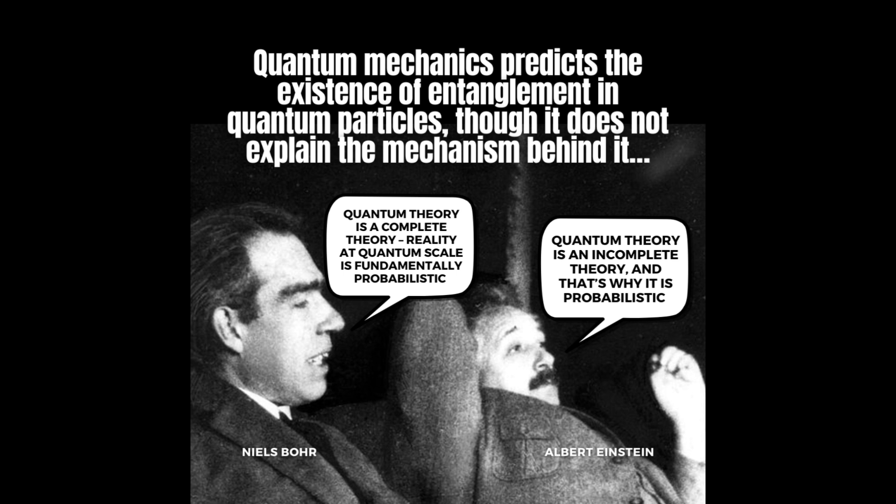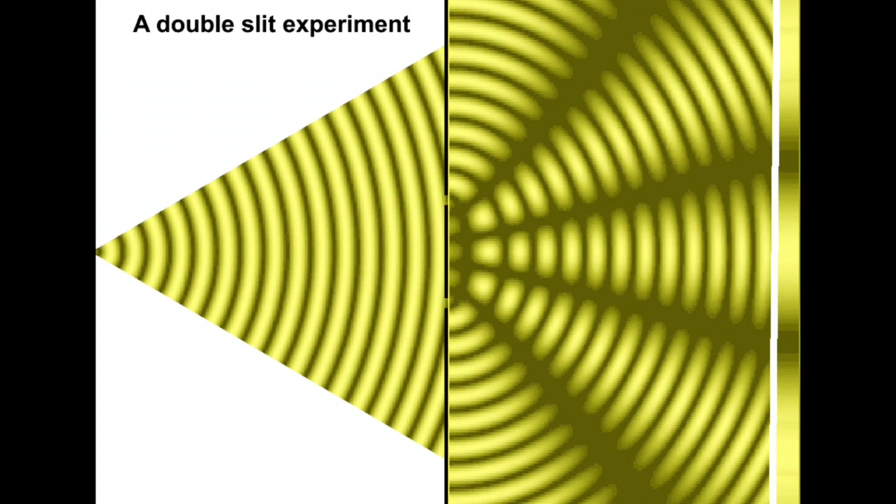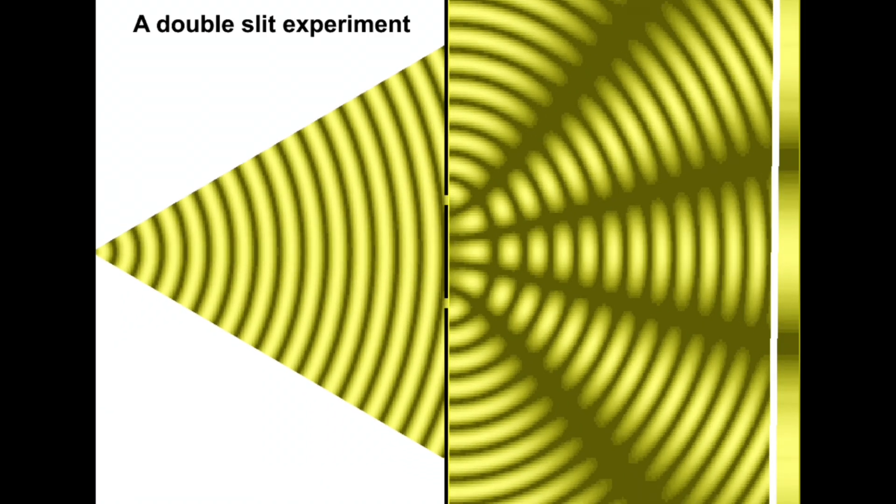This notion of incompleteness was most famously articulated by Albert Einstein, Boris Podolsky, and Nathan Rosen in their 1935 paper on the EPR paradox, where they argued that quantum mechanics, as formulated by the Copenhagen interpretation, does not provide a complete description of reality.